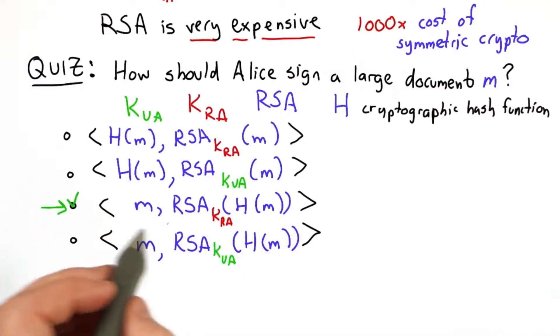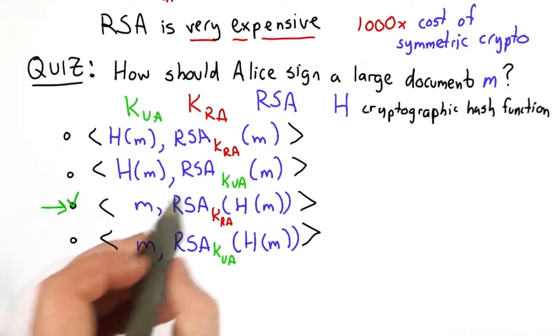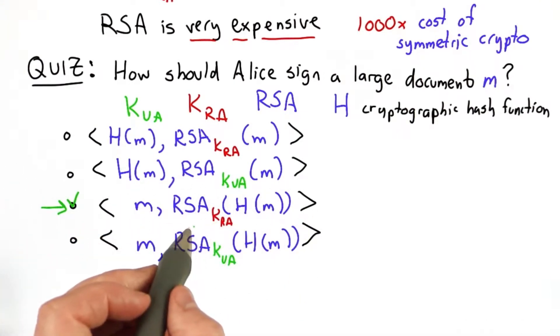The answer is the third choice. We're only looking for signatures here, so we don't need to encrypt the document. We don't care about confidentiality. So we can send the document in clear, but what we want to send along with it is something that proves that it's the document that Alice intended.